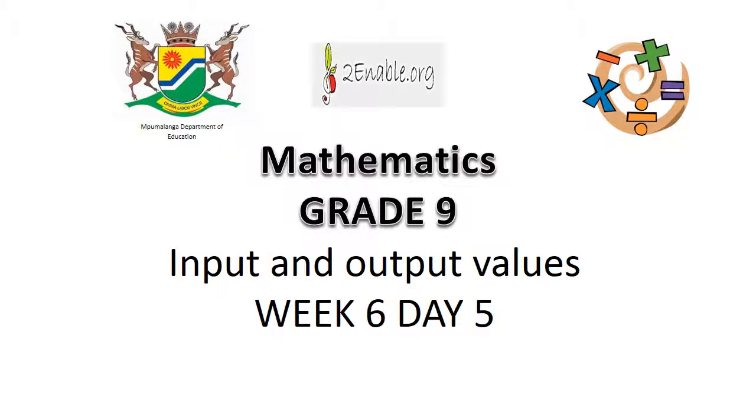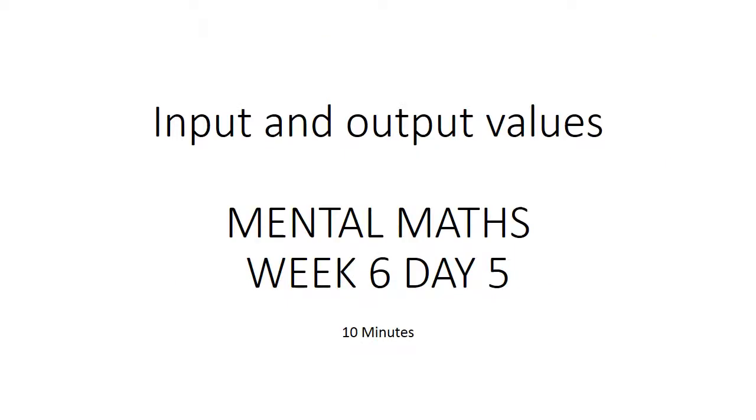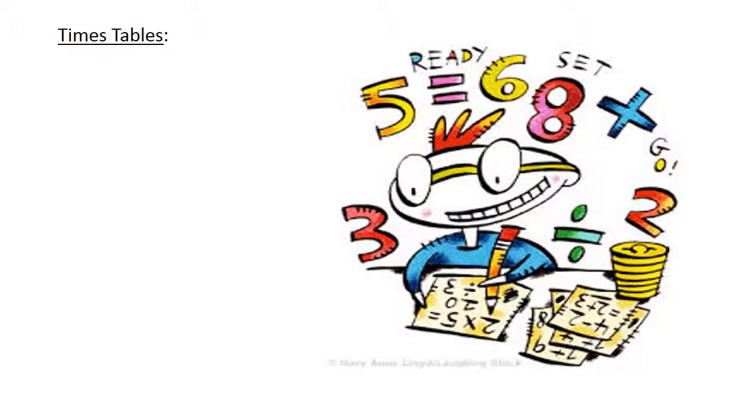Input and output values. Mental math. Times tables: 4 times 9 equals 36, 11 times 7 equals 77.